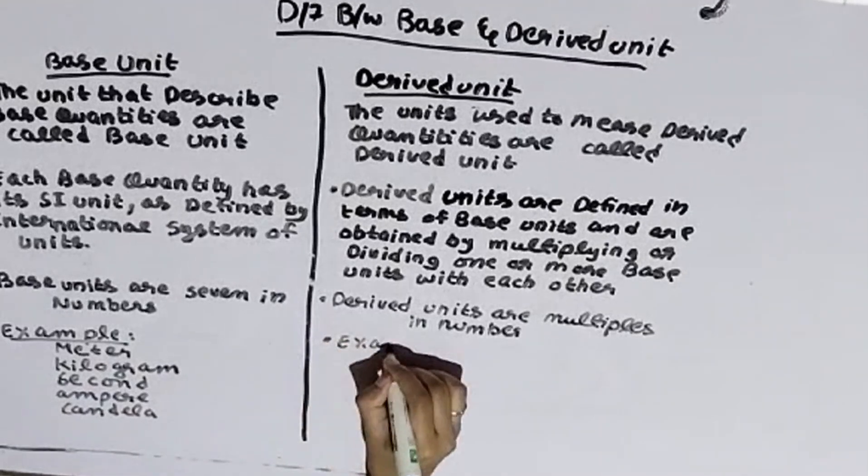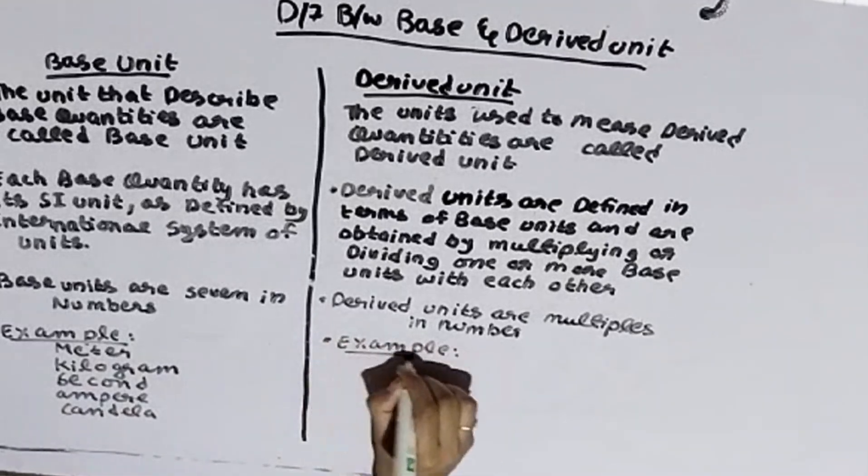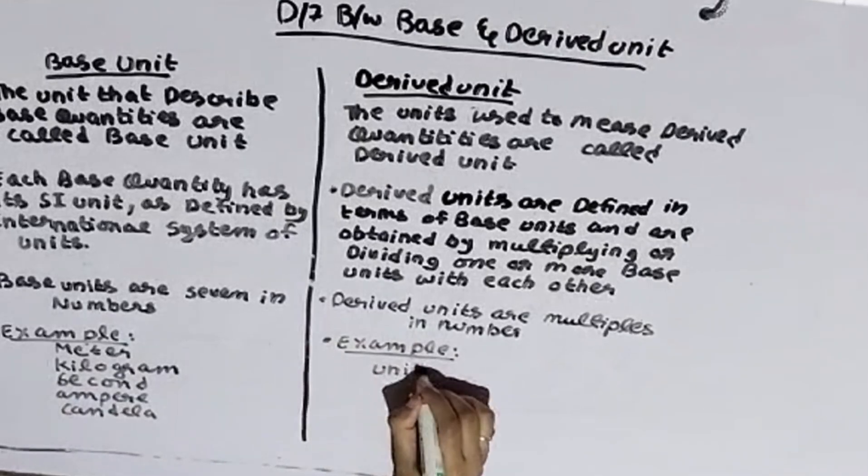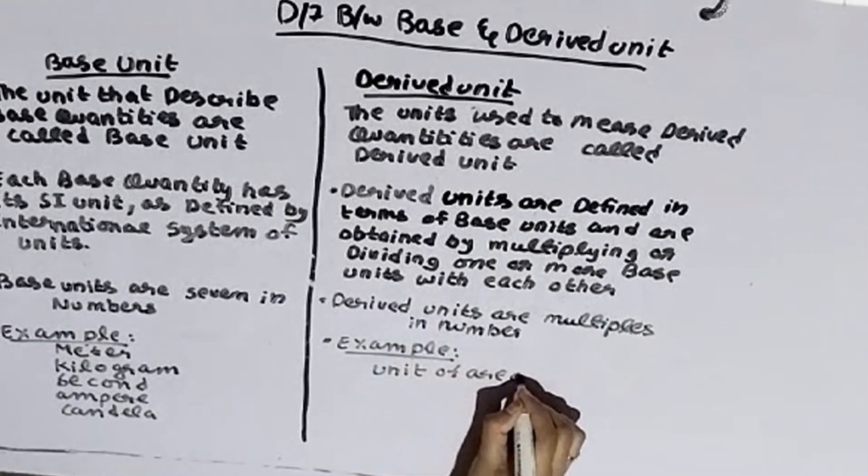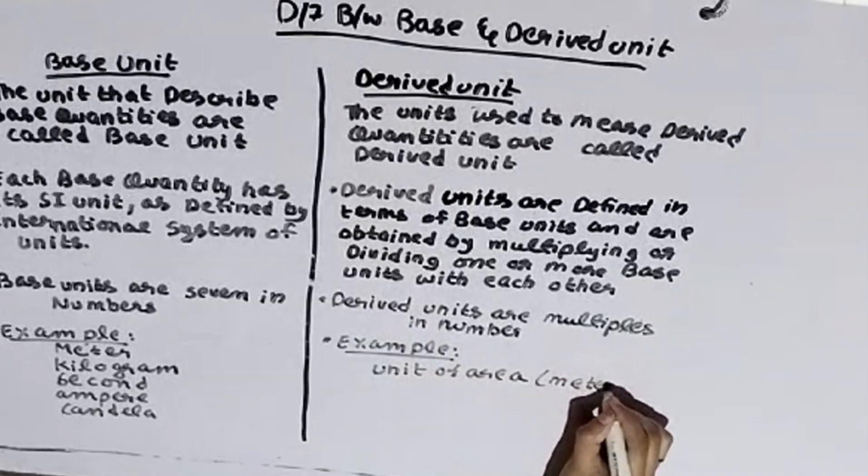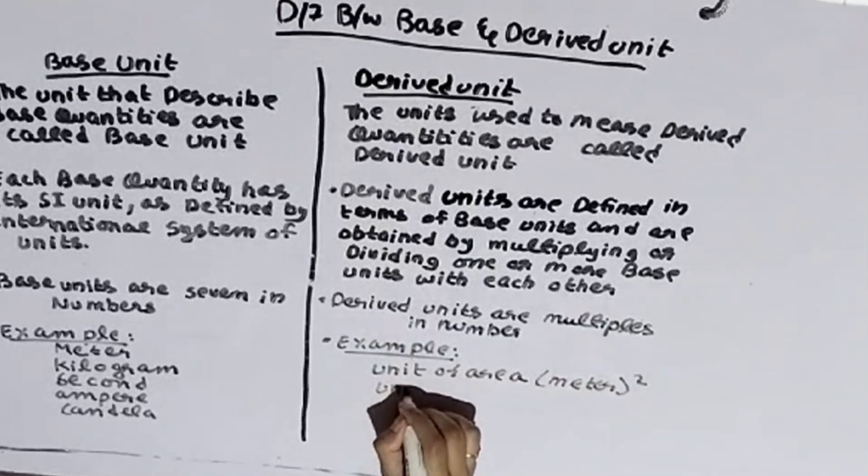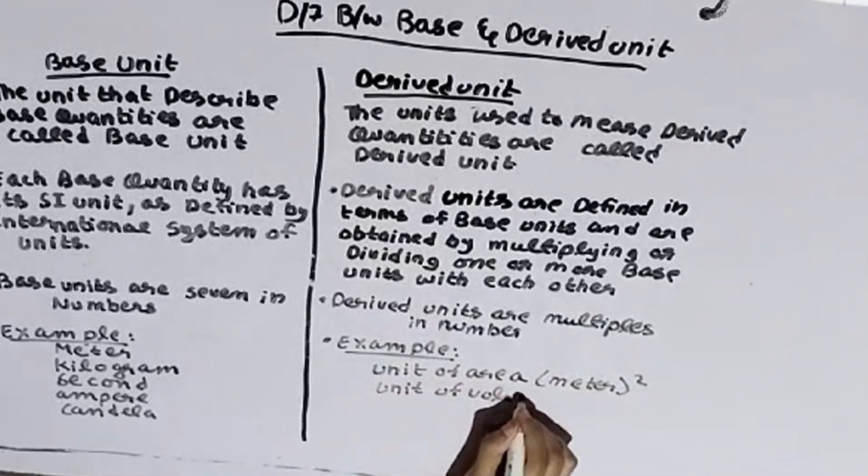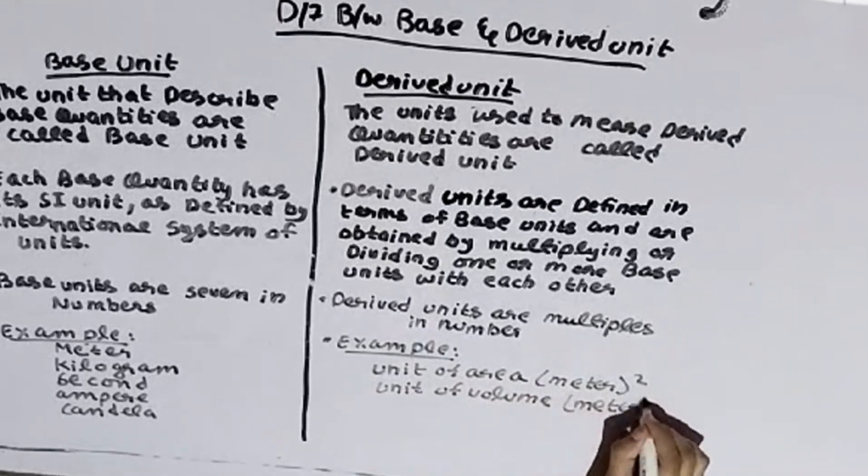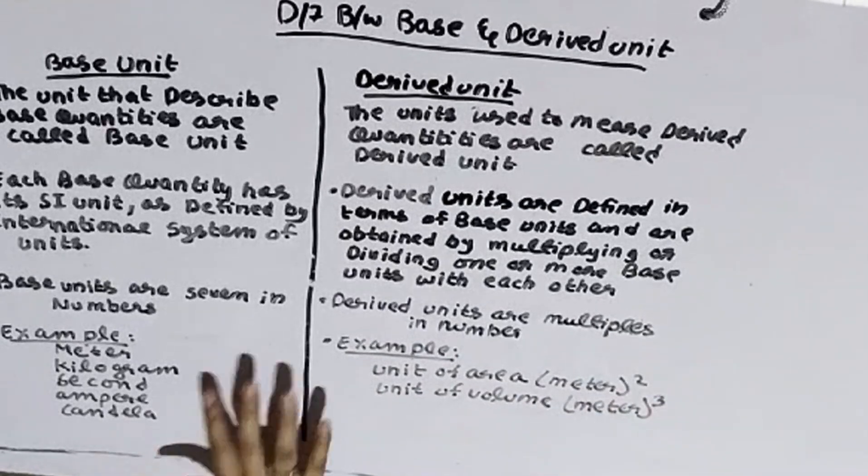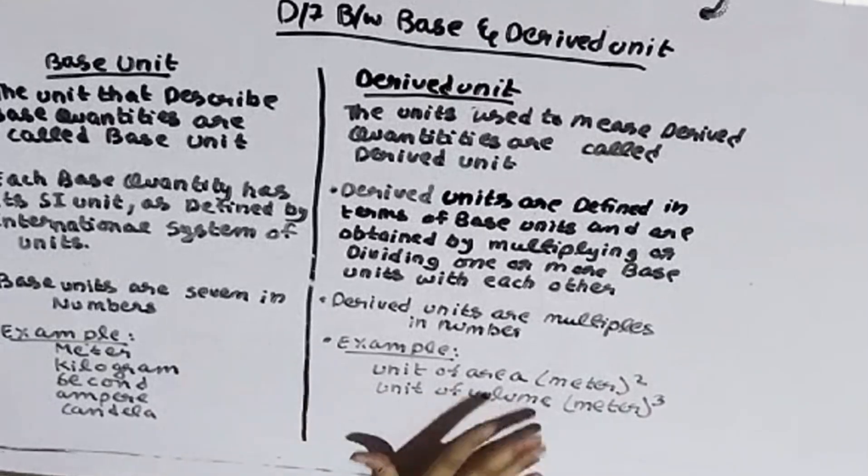What will be the example of a derived unit? Unit of area: meter square. Unit of volume: meter cube. We have written points on base units and derived units.